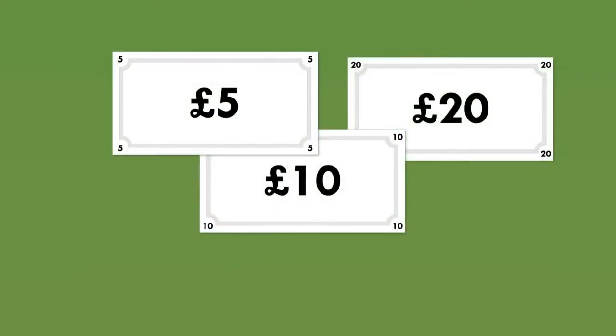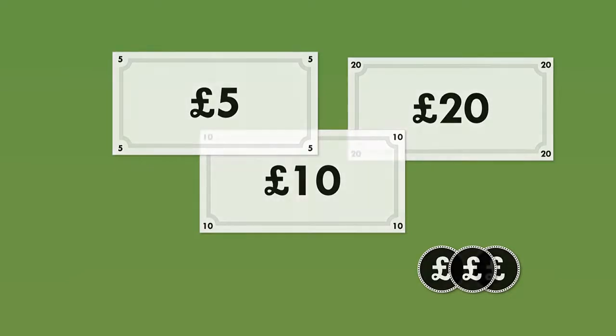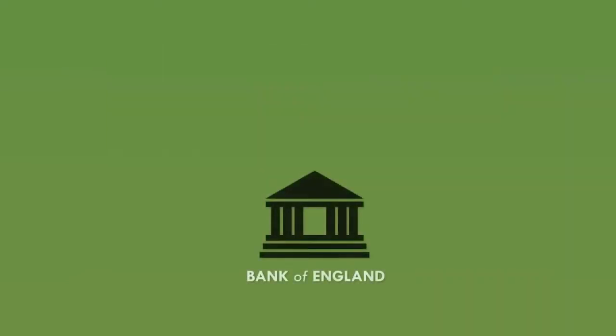Before we start looking at how money is really created, we need to have a quick look at what types of money we actually use in the economy. There are actually three types of money that we use in the economy. As a member of the public, you will only ever have used two of them. The simplest form is cash — the £5, £10, £20 and £50 banknotes and the metal coins that most of us will have in our wallets. Only the government, via the Royal Mint and the Bank of England, is allowed to create these.